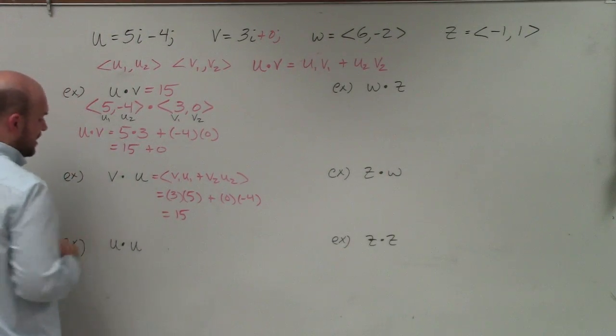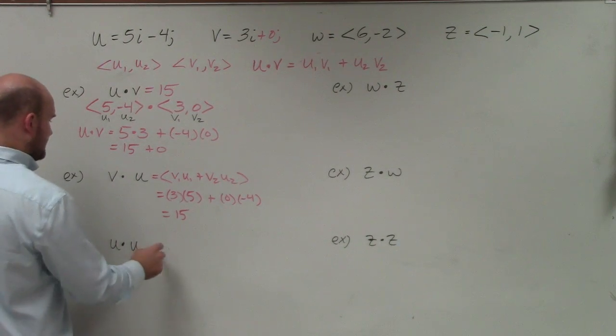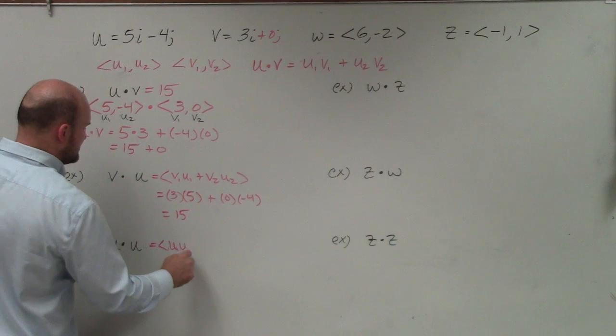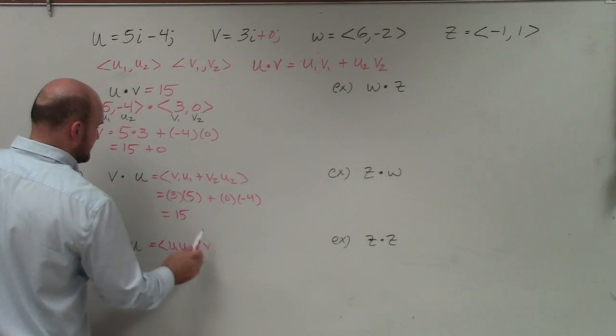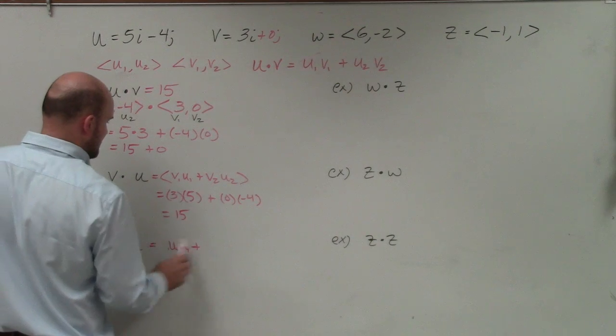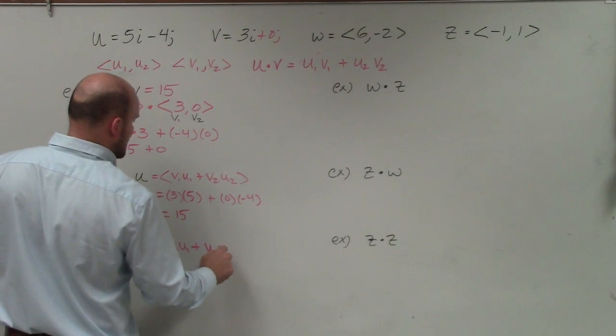And if I take a vector dot product with itself, I'm basically going to, it's going to look something like this. It's basically u1 times u1 plus, not a vector, keep on making that mistake, u2 times u2.